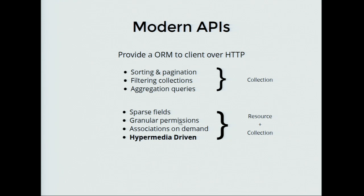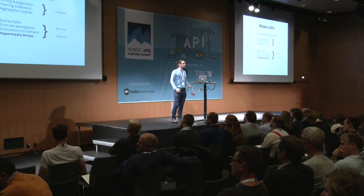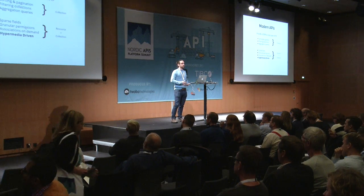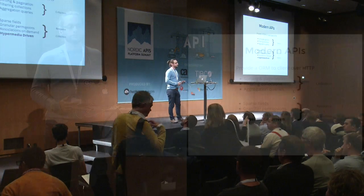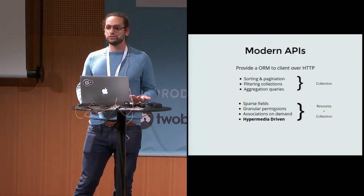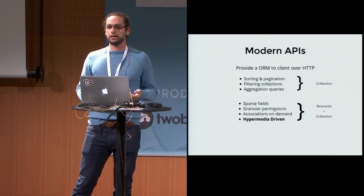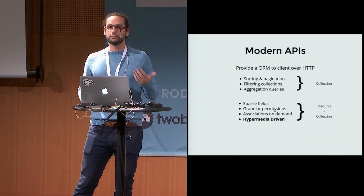Nevertheless, we have been building really good APIs. We provide sorting, pagination, filtering, even aggregation queries like 'give me the average followers of a user,' and we allow the client to select only specific fields of the response. But when it comes to hypermedia, I think people get confused — what's being included? Is it only links, or also information about how the client can manipulate the resources?